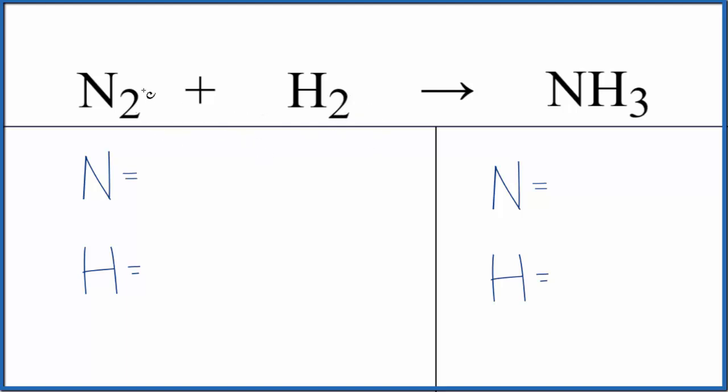Let's balance the equation. We have two nitrogen atoms and two hydrogen atoms in the reactants. In the products we have one nitrogen and three hydrogen atoms.